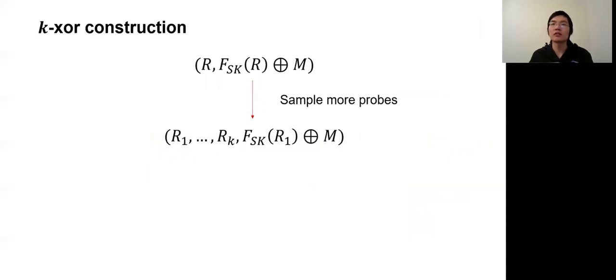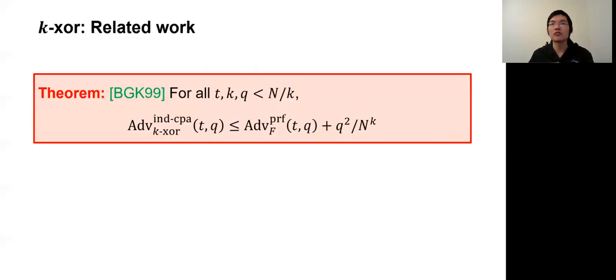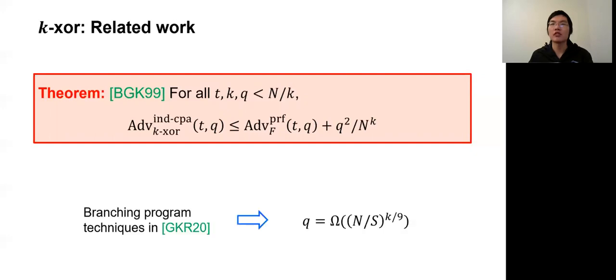Now, we start to discuss the k-xor scheme, slightly different from the ST construction. The k-xor construction actually XORs the PRF outputs as a plaintext mask after sampling the k probes, instead of applying an extractor to concatenate the PRF outputs. The k-xor construction was first proposed by Bellare, Goldreich, and Krawczyk. They also proved a bound, which is of course memoryless, and holds in a regime where the number of queries is upper bounded by big N. We can also derive a sub-optimal trade-off using the branching program techniques, which was recently used by Garg and Raz to study time memory trade-off of Goldreich PRG. However, in our work, we are targeting a bound which is as tight as possible.